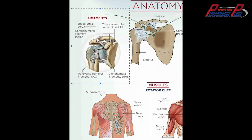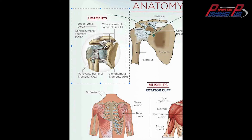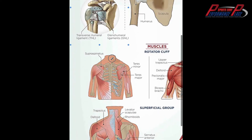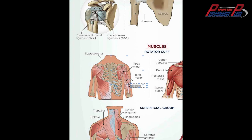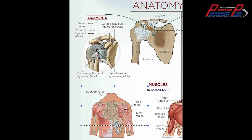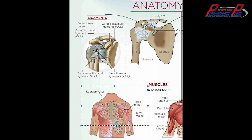They hold the complex together — they hold the bony architecture together. We've already learned that the muscles, the rotator cuff group — I should circle the whole thing — the rotator cuff group holds the ball and socket dynamically in place.